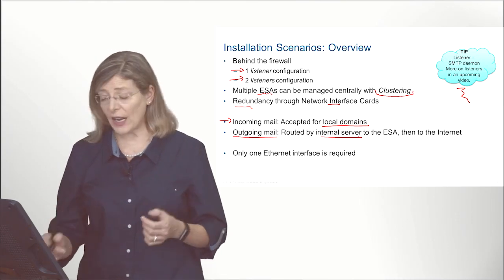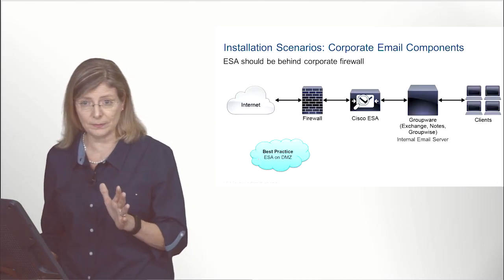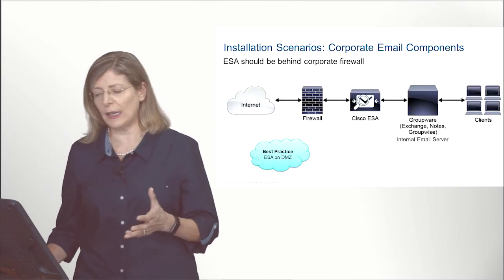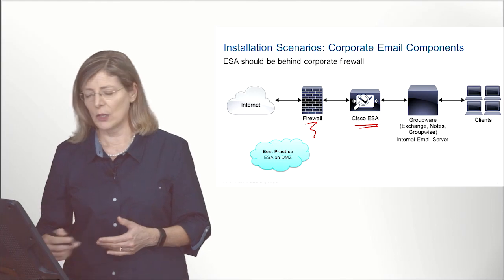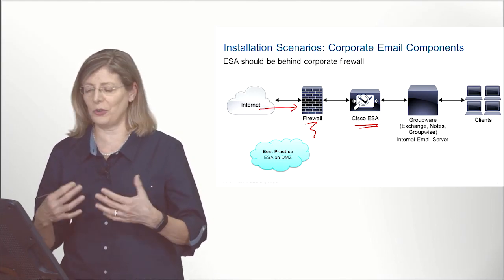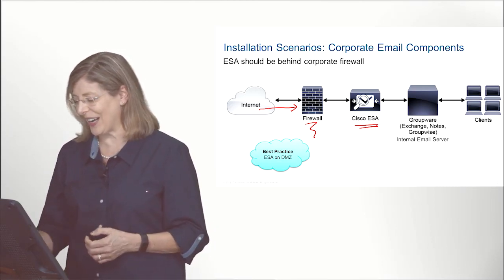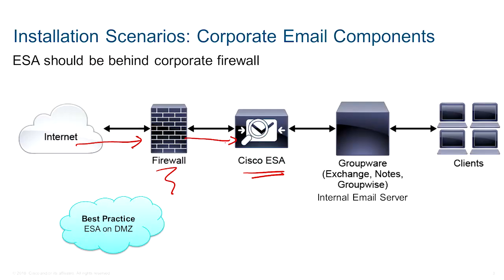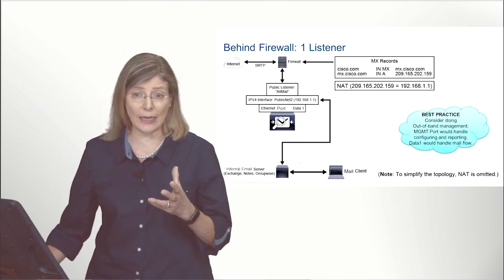To get your ESA working in real life, you need only one Ethernet interface, though you could have two. Typically, your ESA should be sitting behind a firewall, so traffic will arrive from the internet through your firewall. The email will then make it to the ESA, and the ESA will pass it to your groupware server, which will deliver the email to the client. The reverse path is also the same. Best practices call for your ESA to be located on your DMZ.